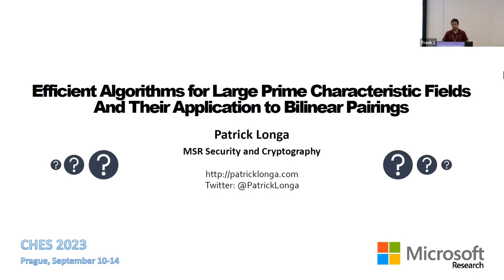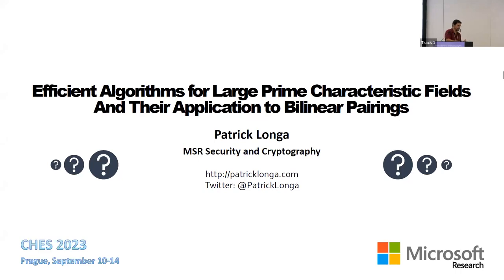Further Q&A: Asked if the method could be applied to SNARKs, Patrick noted he hasn't studied other parts of that computation but is confident of the boost from pairings, and that faster G2 arithmetic over FP^2 would be a straightforward benefit. The paper mentions several follow-up directions. Asked about RSA, he noted RSA doesn't naturally present a summation of products structure, so the technique likely doesn't apply there.